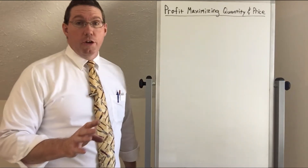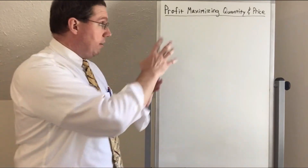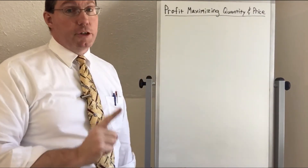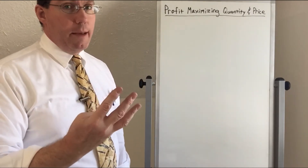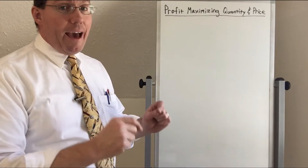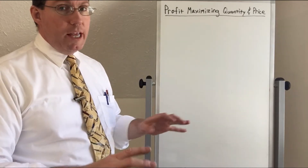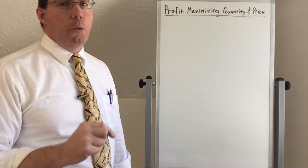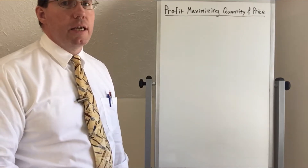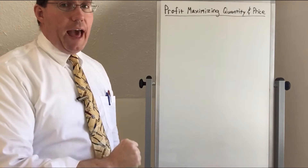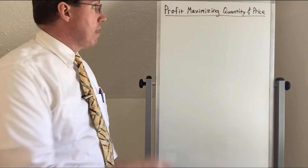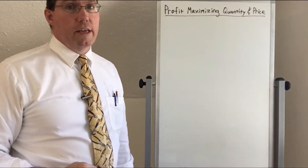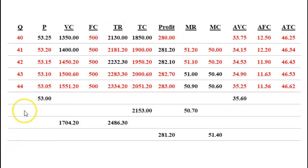The first thing I want you to do in order to get into understanding this is I want you to go back to your table. You'll notice that there are four more lines on that table that we have not completed. They have bits of information put in them, but what I want you to do now is try to complete the last four rows of that table, and then we're going to use that information to understand how a business identifies the profit-maximizing quantity and price. Let's go ahead and try and finish up this table.